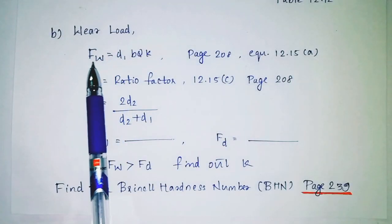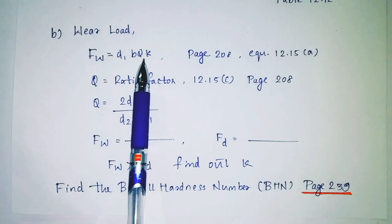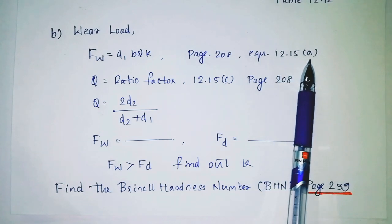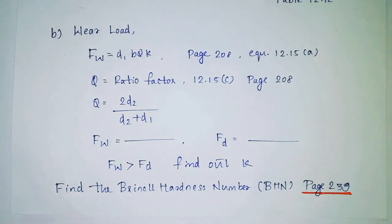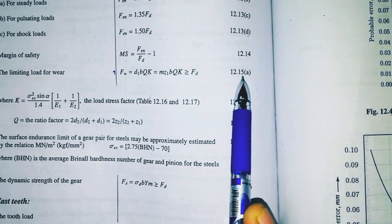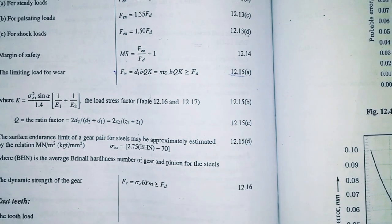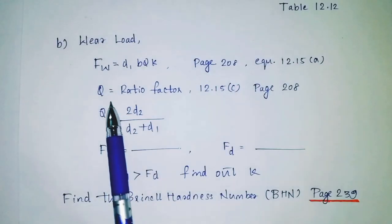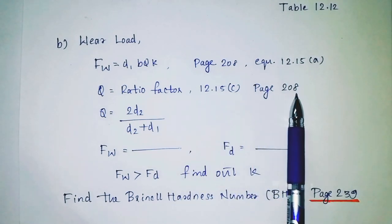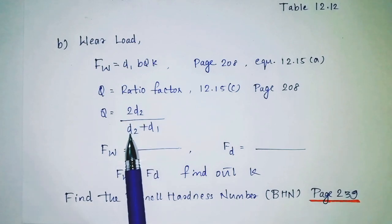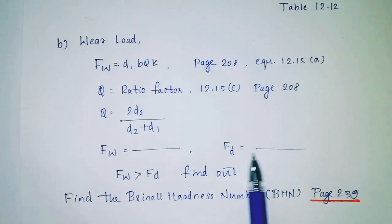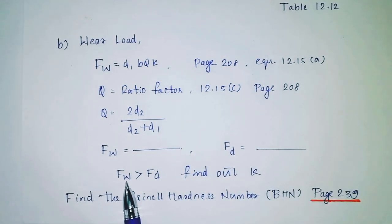Now if I select wear load: Fw equals d1 into bq, page number 208, equation 12.15a. Q equals d2 divided by d2 plus d1. Find Fw. Fw should be greater than Fd.